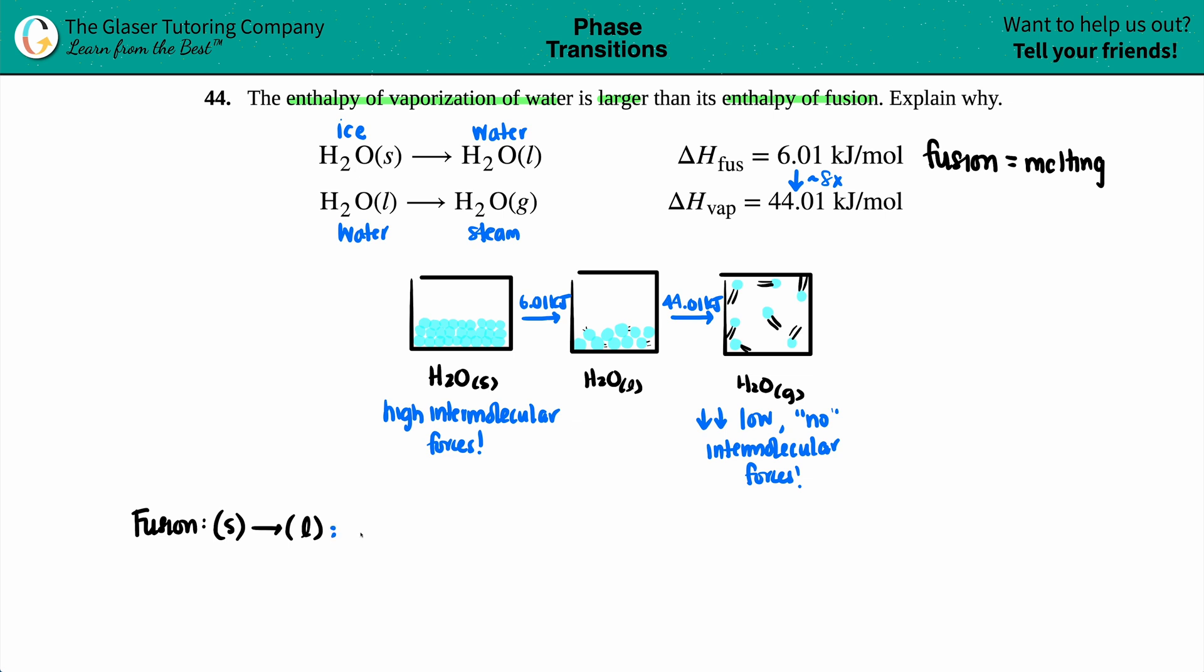So we'll say for fusion, which is the solid to a liquid, the energy that is required is low, low amount of energy, because basically you only need to overcome a small amount of intermolecular forces. They're still very closely together, but they're just able to slide over each other. So low amount of energy because only a little bit of intermolecular forces are overcome. The molecules can slide over each other, but they're not all over the container.